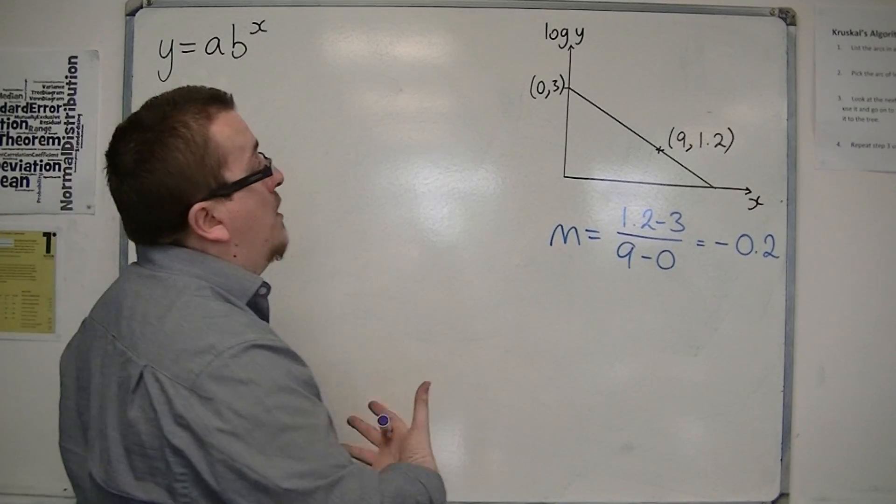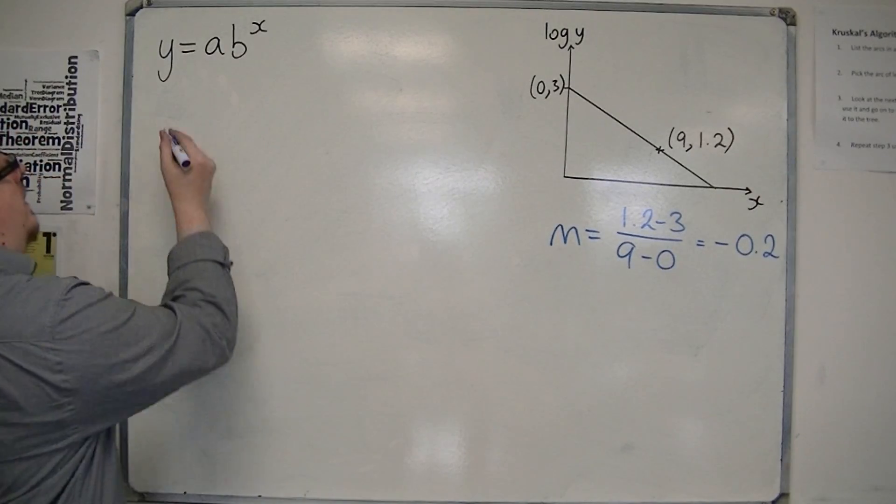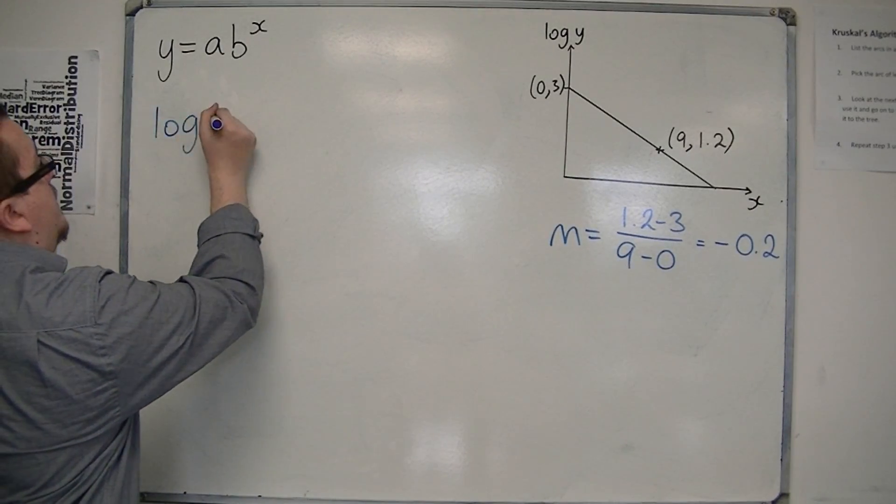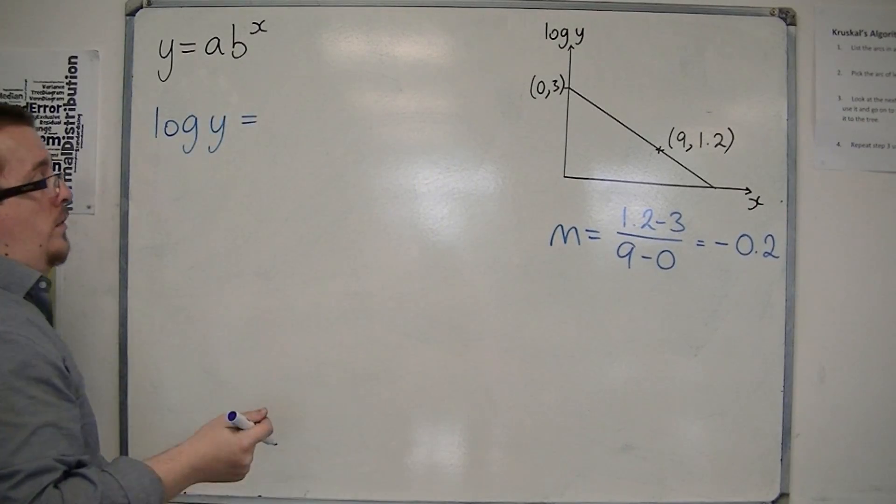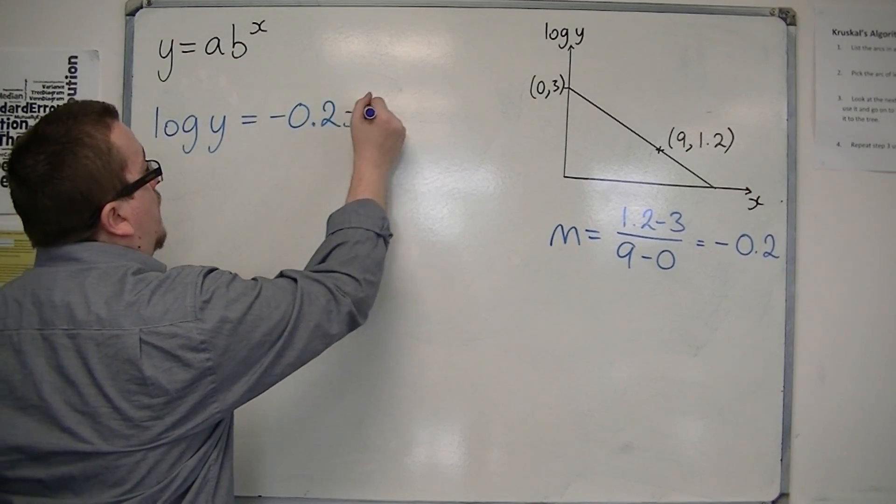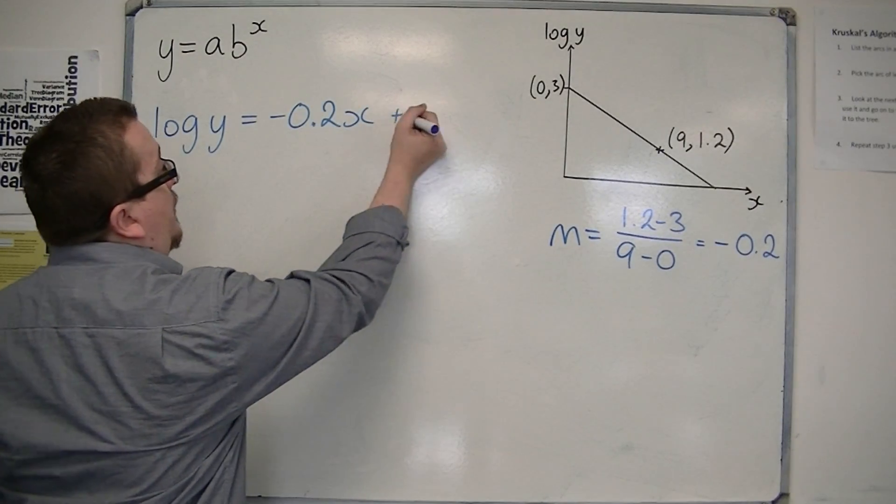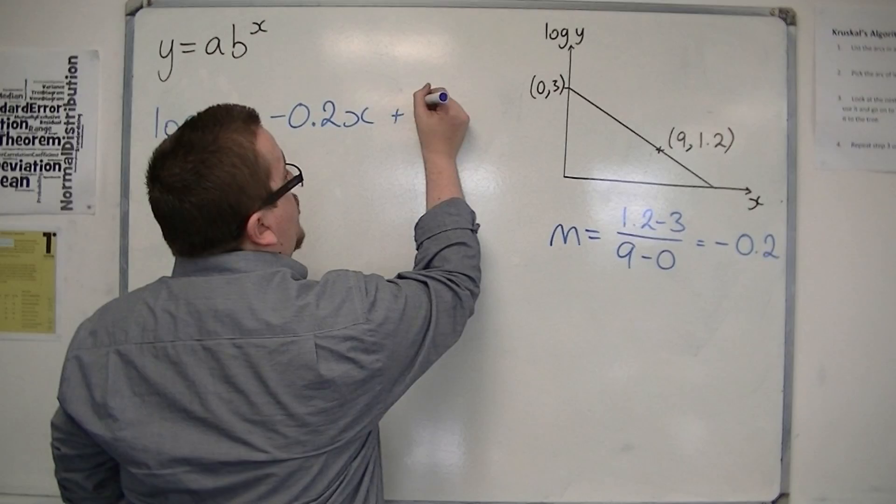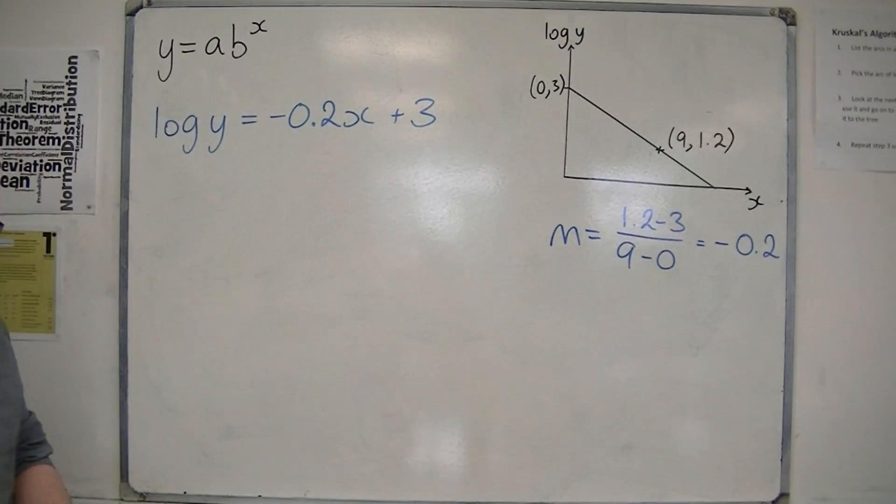So that means that I can write down the equation of this line as log y is equal to mx plus c. Now c is the y-intercept, which is just 3.